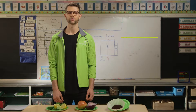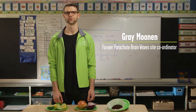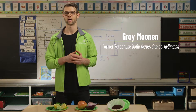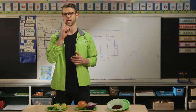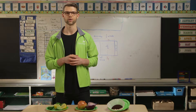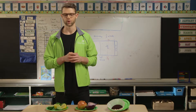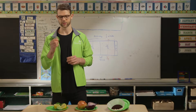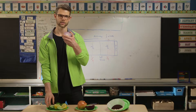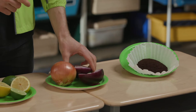Let's learn the olfactory adaptation activity from Parachute Brainwaves. This activity demonstrates how smell works in our brain and introduces the concepts of the olfactory pathways and adaptation. We recommend using citrus fruits, onions, and ground coffee.